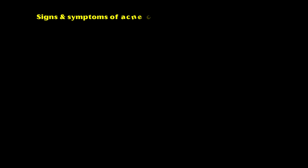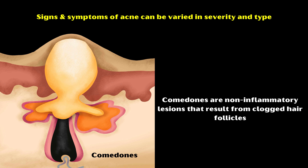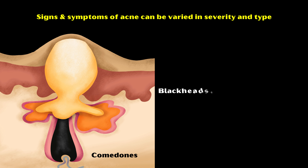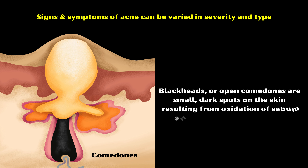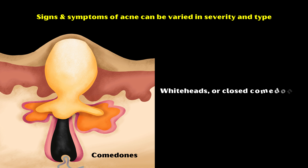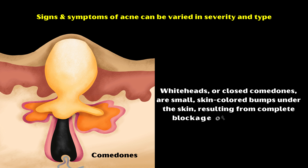Signs and symptoms of acne can vary in severity and type. Comedones are non-inflammatory lesions that result from clogged hair follicles. There are two types: blackheads, or open comedones, are small dark spots on the skin resulting from oxidation of sebum and keratin within the follicle; and whiteheads, or closed comedones, are small skin-colored bumps under the skin resulting from complete blockage of the follicle pore.